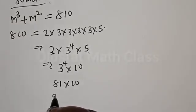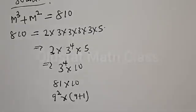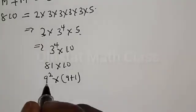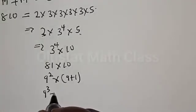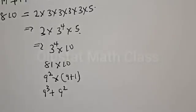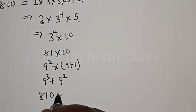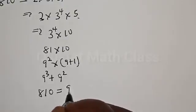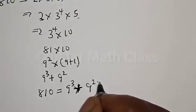And 81 is the same thing as 9 squared, then multiplied by 10 can be written as 9 plus 1. Let's open this bracket. We have 9 squared multiplied by 9, that is 9³, plus 9 squared multiplied by 1, which is 9 squared. Therefore, 810 can be expressed as 9³ plus 9².